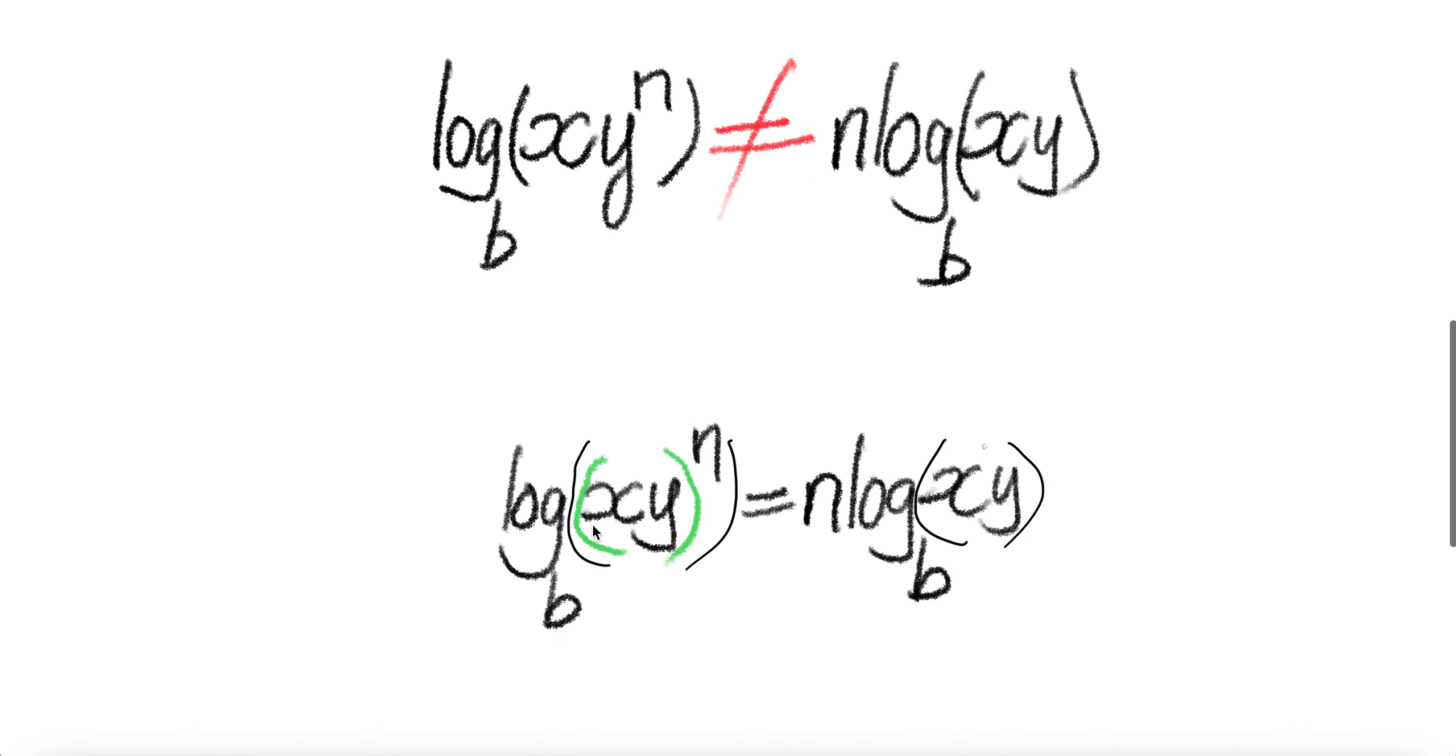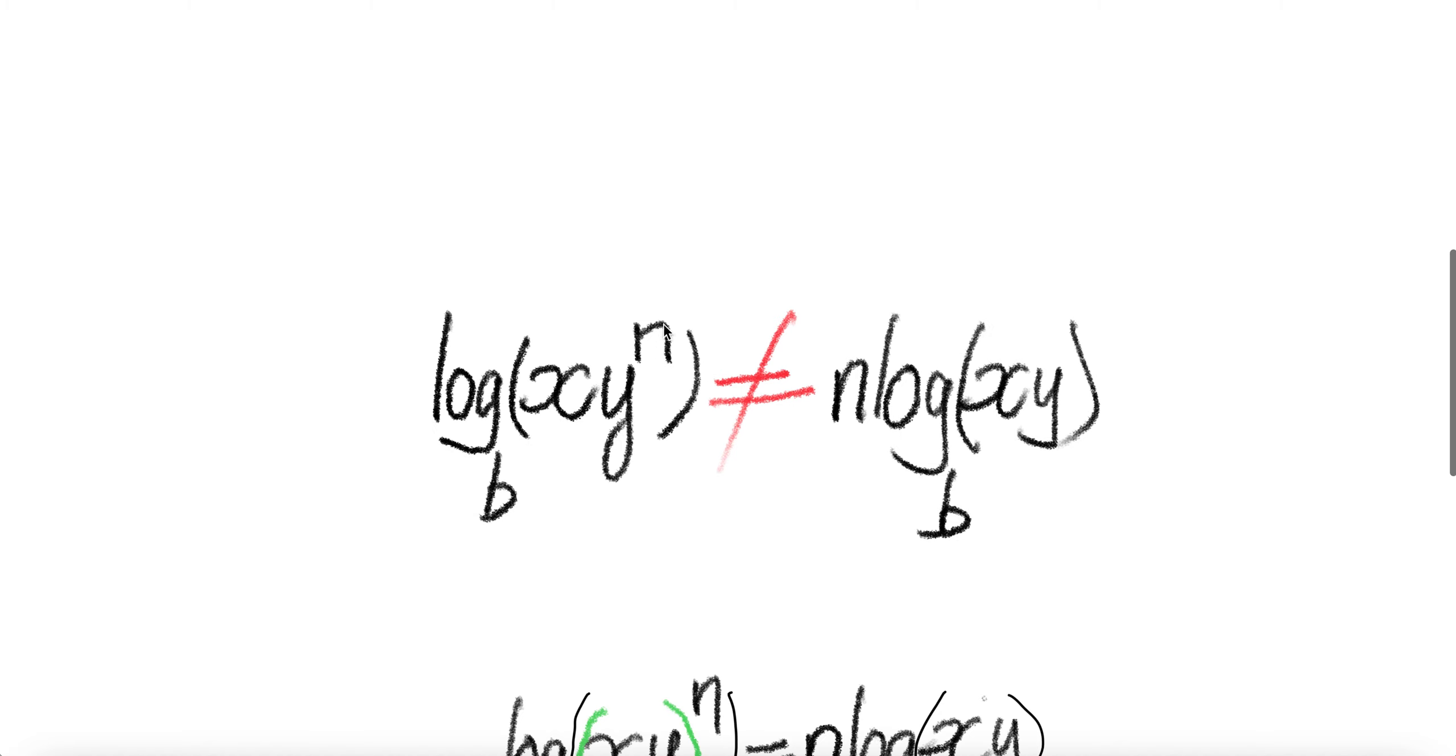But if you put brackets around xy to the power n, yes. Now log of (xy) to the power n to the base B equals n times log of xy to the base B. Here, we can bring this exponent down because it belongs to the bracketed term, not to that whole group.